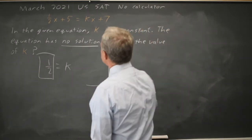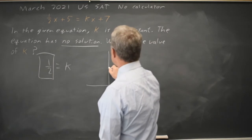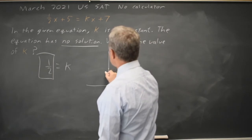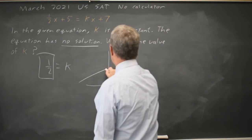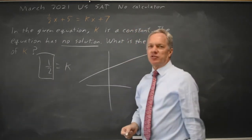If we graph the left-hand side, 1 half x plus 5, that's a line with a slope 1 half and an intercept of 5.